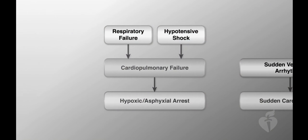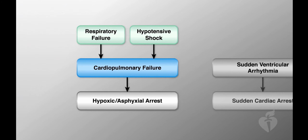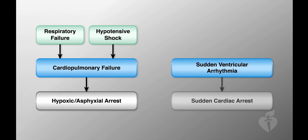There are two general pathways that children take to develop cardiac arrest. The most common is due to the progression of respiratory failure or hypotensive shock, which will progress to cardiac arrest if unrecognized, untreated, or unresponsive to medical therapies. The other pathway is sudden ventricular arrhythmias leading to acute cardiac arrest, which, unlike in adults, is very uncommon in children.